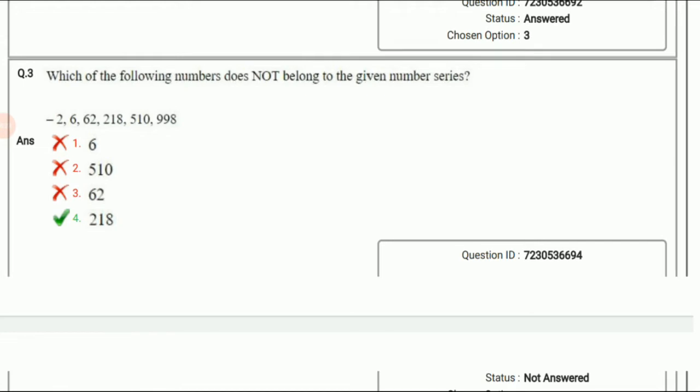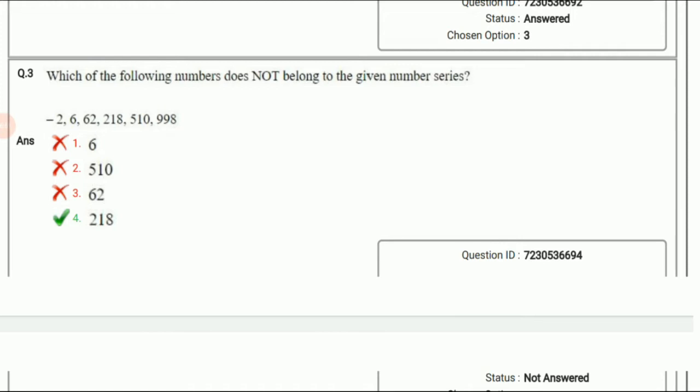Next question: Which of the following numbers does not belong to the given number series? We have to find the odd one out. The series is -2, 6, 62, 218, 510, and 998. If we see the series, -2 is single digit, 6 is single digit, 62: if we add both numbers 6+2 we get 8. 2+1+8 we get 11. 5+1+0 we get 10, and 9+9+8 we get 26. All the numbers are even except for 11 which we got by addition of 2+1+8. The odd number in the given series is 218.